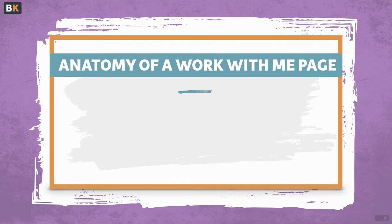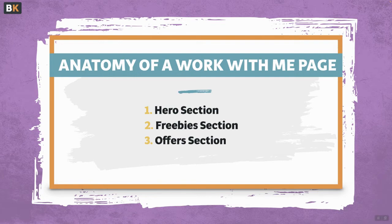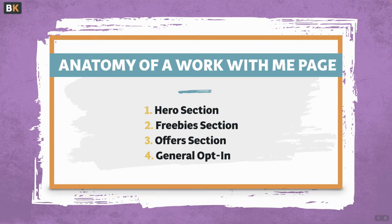Let's talk about the anatomy of a Work With Me page. Your Work With Me page should include a hero section, a freebie section, an offer section, and a general opt-in. This is much smaller than the homepage and the about page, and the purpose of this page is to direct them to the offers you have and help them make a decision on which one's right for them. It's still going to have a hero section and a freebie section, and we're still optimizing for lead generation while starting to pivot them towards a conversion for a sale.